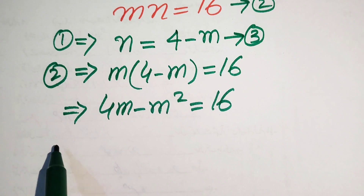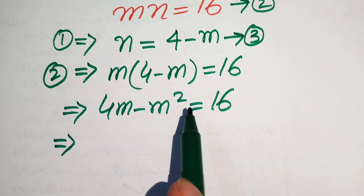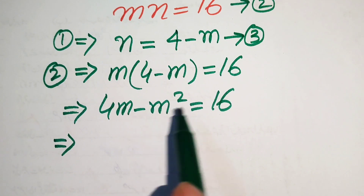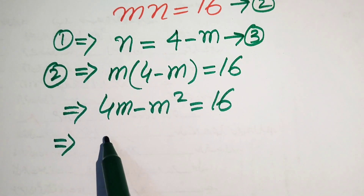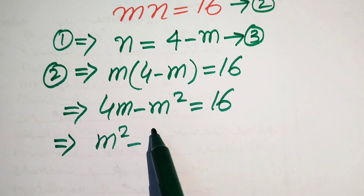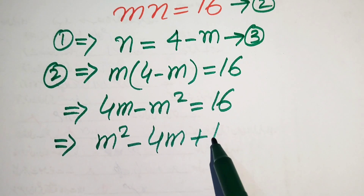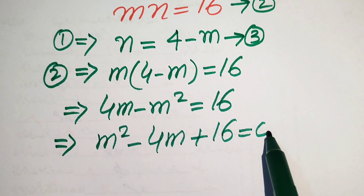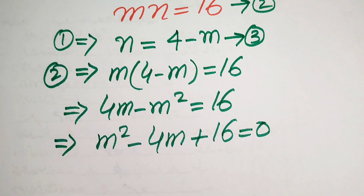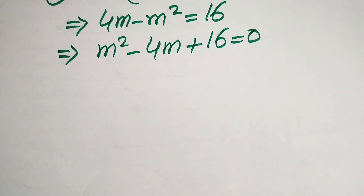This equation is quadratic but not in standard form. We move all terms to the right hand side: minus m squared becomes plus m squared, plus 4m becomes minus 4m, giving us m squared minus 4m plus 16 equals 0. This is the standard form of the quadratic equation.